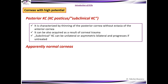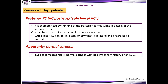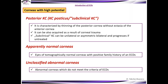Apparently normal corneas are eyes with tomographically normal corneas but a positive family history of ectatic corneal diseases. Unclassified abnormal corneas are abnormal corneas which do not meet the criteria of any ectatic corneal disease.